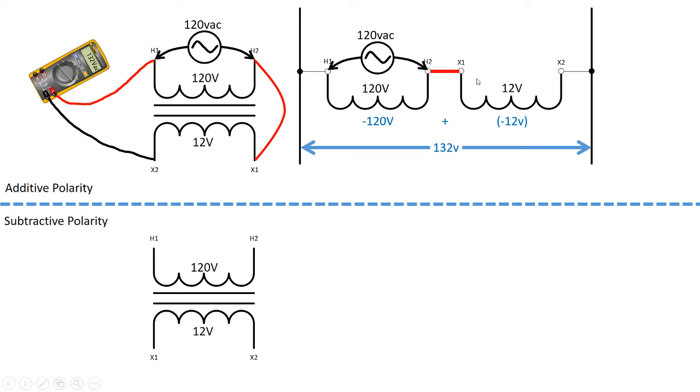Anytime we take two coils and we put them together like this to get an additive connection, the voltages of those coils are going to add together to give us a higher than applied voltage.